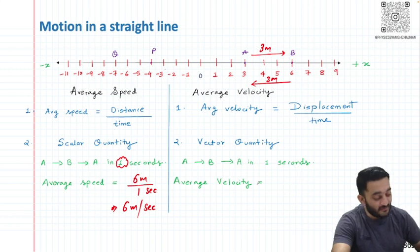On the other side, for average velocity, my displacement from A to B I am going to take as positive, and B to A I can't have the same sign because it is exactly opposite of A to B, so I need to take a negative sign.